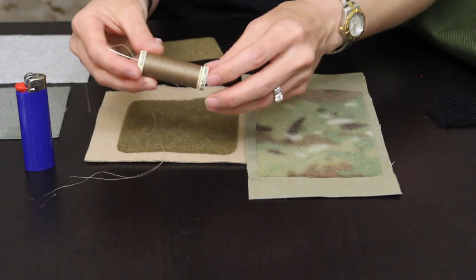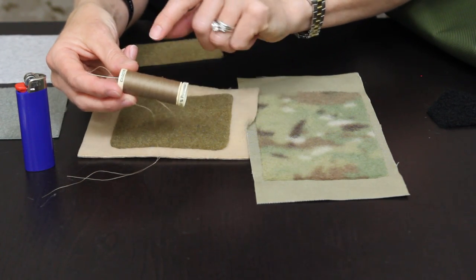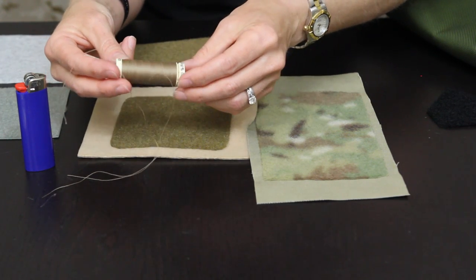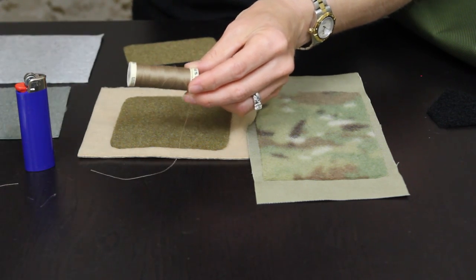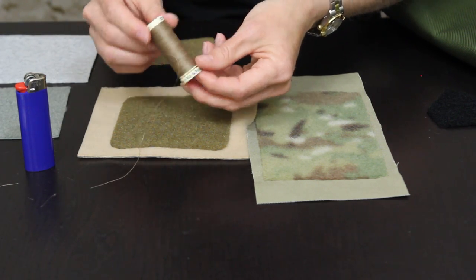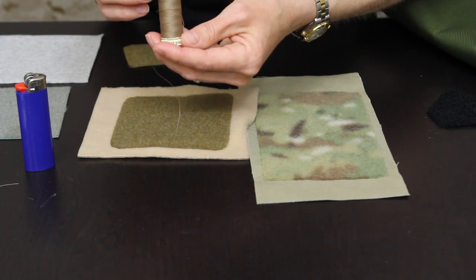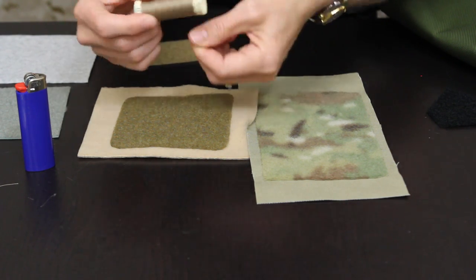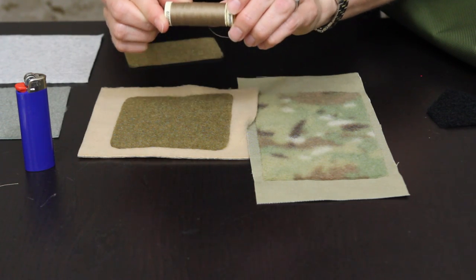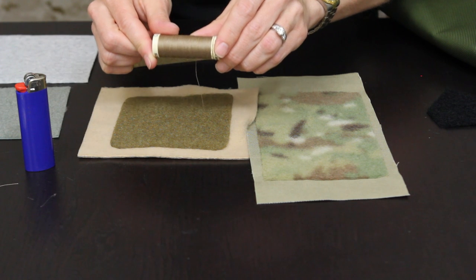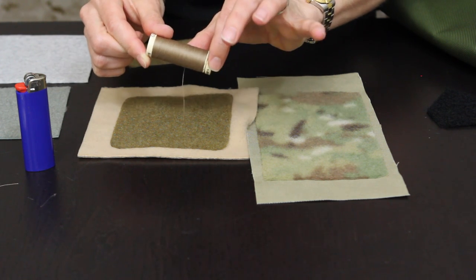So to sew on the coyote loop, this is also just available at a local Joann's craft store. I picked up this thread which is a Guterman brand thread. It's a hundred percent polyester and the color number is 542. Whenever you're looking for thread make sure you pick a heavy duty thread. I don't recommend cotton at all. All of the threads that I'll show you today are heavy duty and they're either a polyester blend or they're a hundred percent polyester.